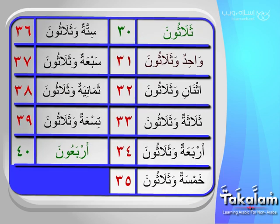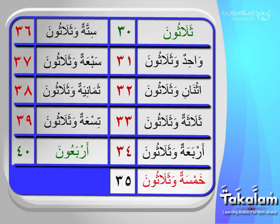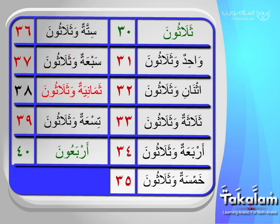Like this example: واحد وثلاثون، إثنان وثلاثون، ثلاثة وثلاثون، أربعة وثلاثون، خمسة وثلاثون، ستة وثلاثون، سبعة وثلاثون، ثمانية وثلاثون، تسعة وثلاثون.